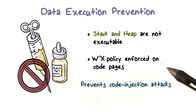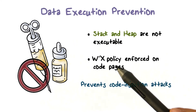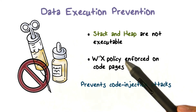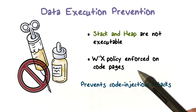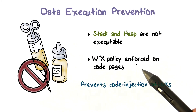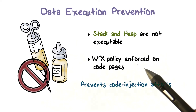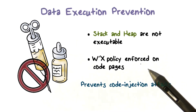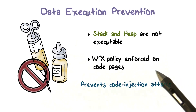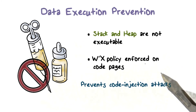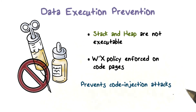Data execution prevention is an implementation of the policy that makes writable and executable mutually exclusive. If a page is writable, meaning that at runtime new data or code can be written on that memory page, then this page is not executable. This prevents code injection attacks.